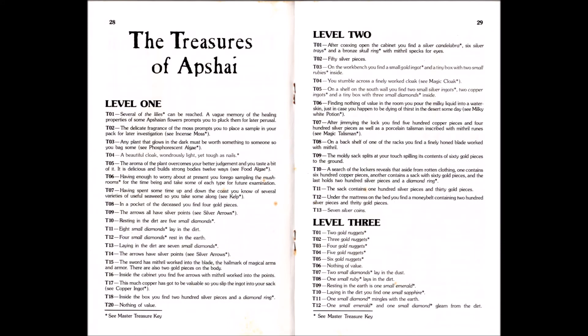Auf der nächsten Seite ist eine Beschreibung der Schätze, die es in verschiedenen Levels zu finden gibt. Dieses T bei den Einträgen bezeichnet den Raum, in dem man sich befindet. Im Spiel hatte man wirklich nur eine kurze Einblendung, einen kurzen Punkt, und dann wurde halt hier im Buch beschrieben, was man da gefunden hat. Das hatte natürlich mehrere Gründe. Man hätte auch im Spiel eine kurze Texteinblendung machen können, aber Rollenspiele waren damals stark von Dungeons & Dragons beeinflusst.